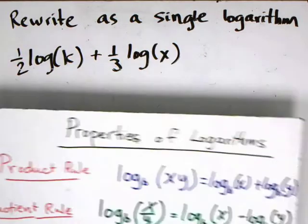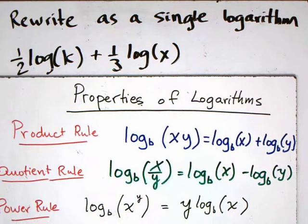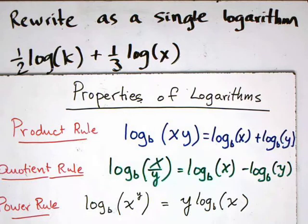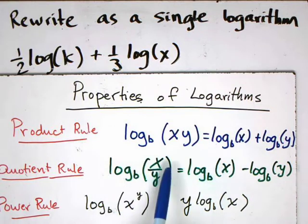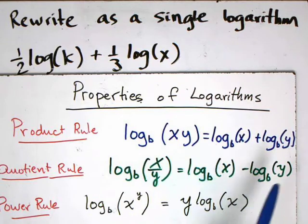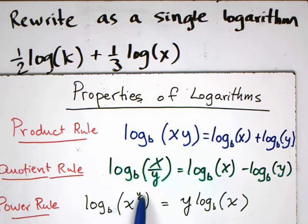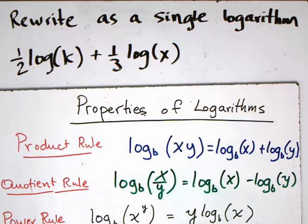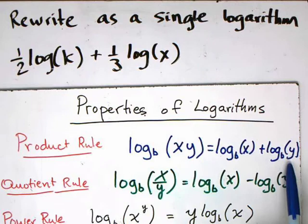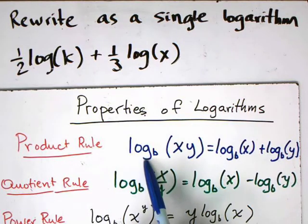To do that, we're going to make use of our properties of logarithms. As a quick reminder: the product rule says that log of x times y can be separated into log of x plus log of y. If you have log of x divided by y, it becomes log of x minus log of y. And the power rule says that log of x to the y power lets you bring the exponent out to the front. When asked to rewrite as a single logarithm, we work backwards to get a statement that uses only one logarithm.